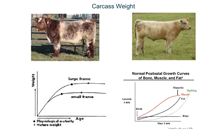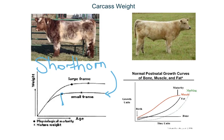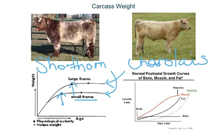Carcass weight is very important, as shown by the earlier graph, and it depends entirely on maturity patterns. A British breed like the Shorthorn is a small-framed animal, so it matures earlier and hits its mature weight sooner than a European breed such as the Charolais, which is a larger-framed animal that hits maturity later. Small-framed animals start depositing fat earlier than large-framed animals, so they finish earlier.